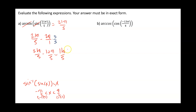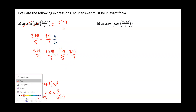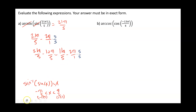So we have to do the same thing again. We're going to subtract 2 pi over 1. We get a common denominator of 5. So this is going to give us 11 pi over 5 minus 10 pi over 5, which gives us pi over 5.